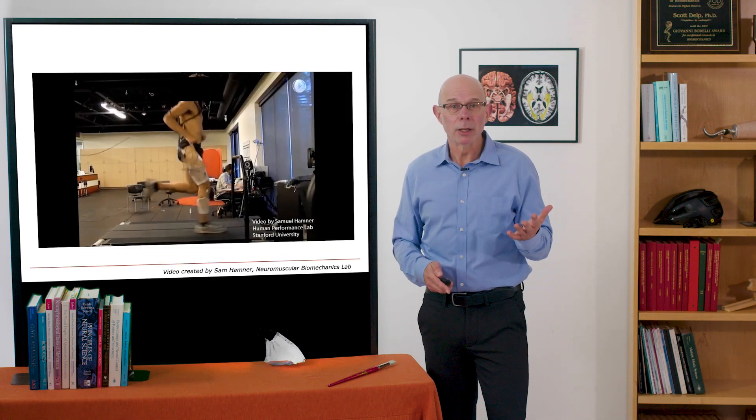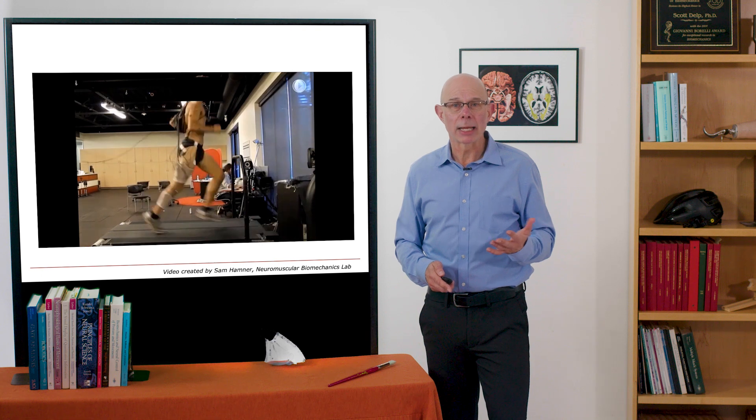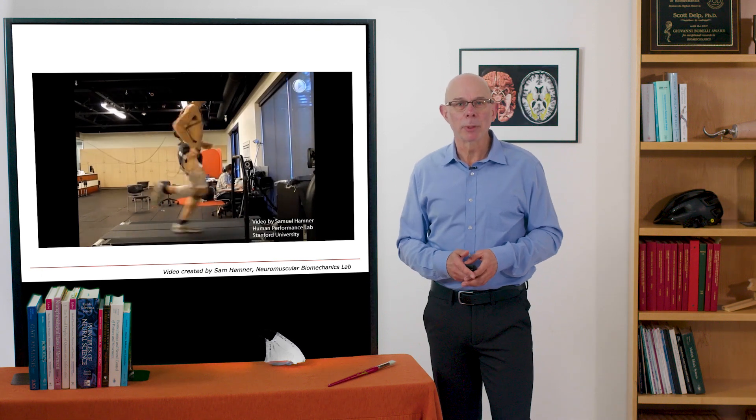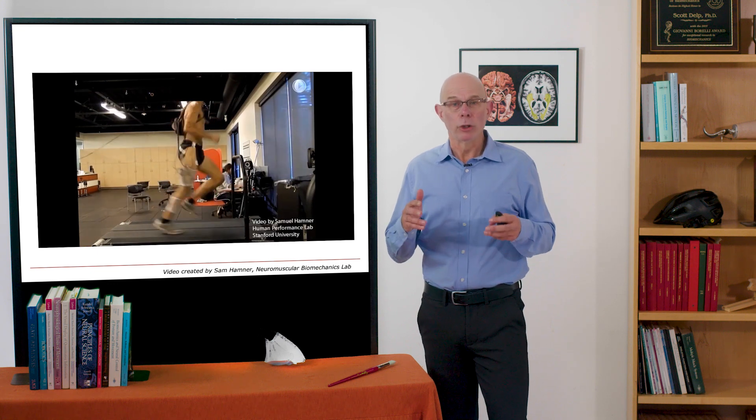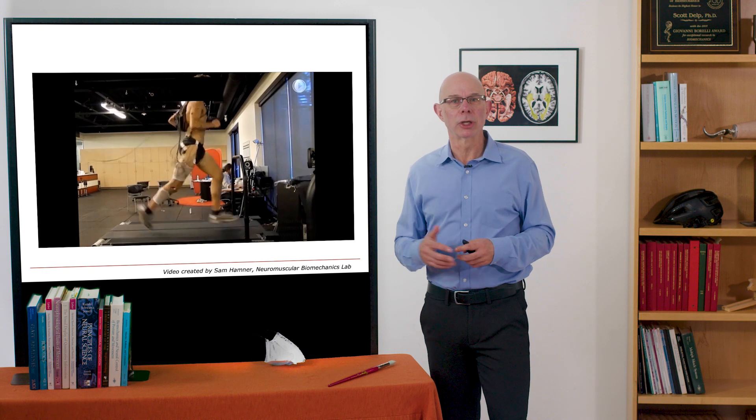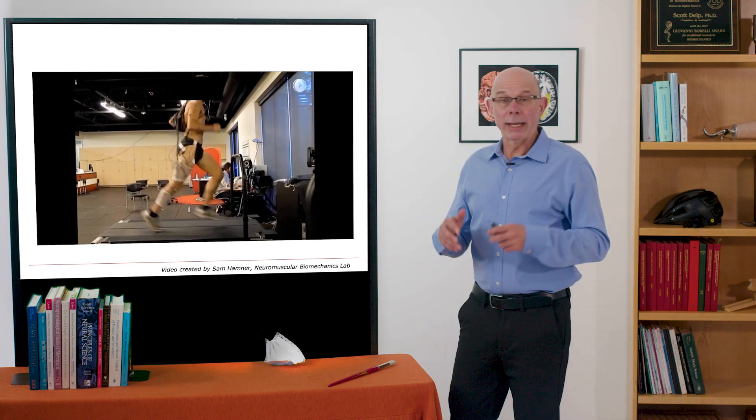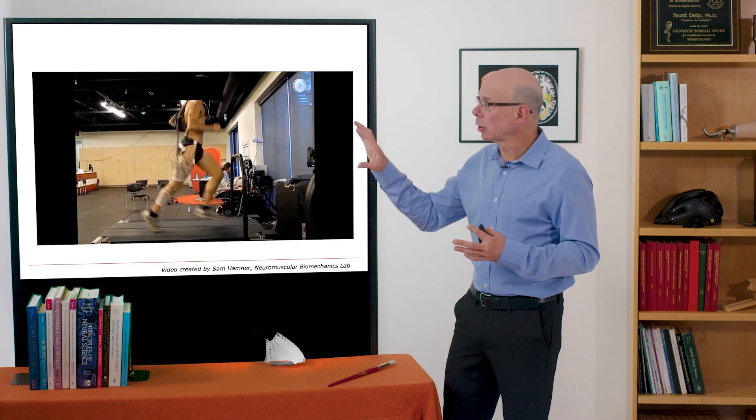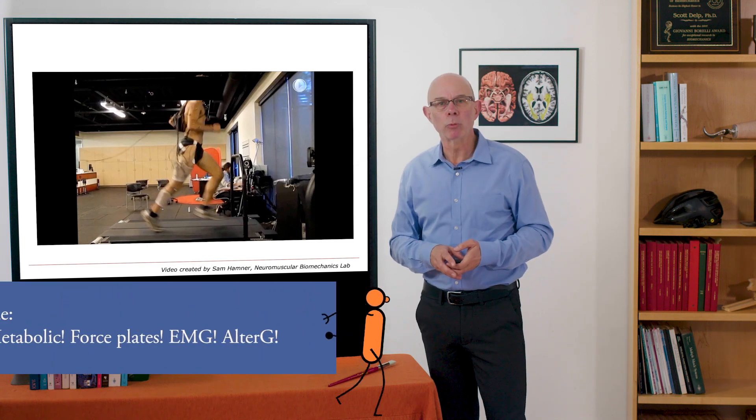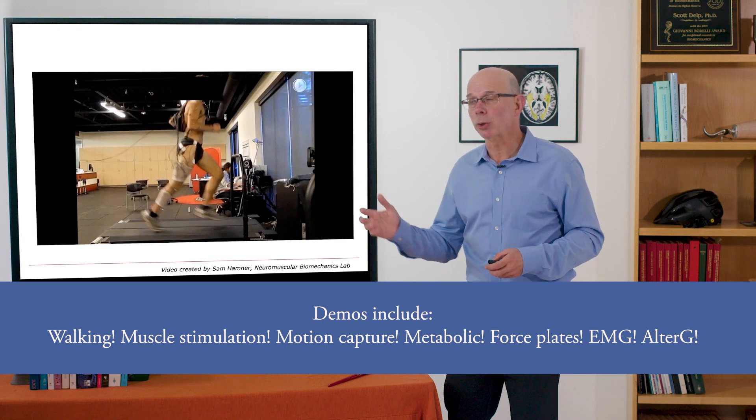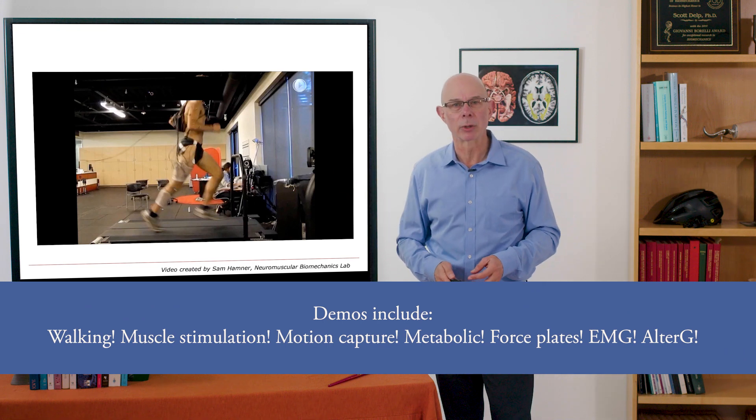We also study movement to optimize human performance and to prevent injury. This is an example of a study in the Human Performance Lab that we use to analyze how muscles contribute to support and propulsion in running. We can go beyond the experimental approaches to look much deeper into movement, and we'll use the Human Performance Lab throughout this course to demonstrate the experimental techniques that we use.